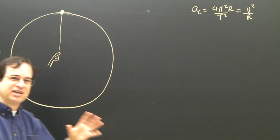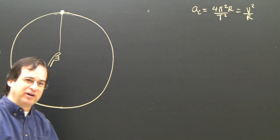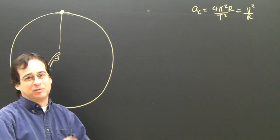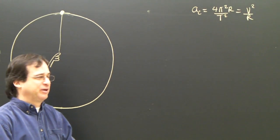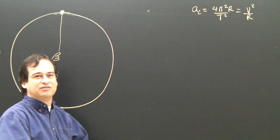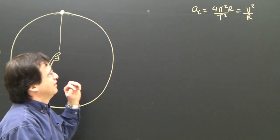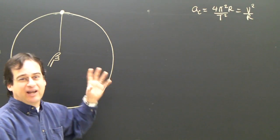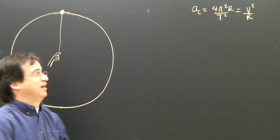The way we solve problems is we draw a free body diagram, label the direction of acceleration as positive, and then write F net equals ma.